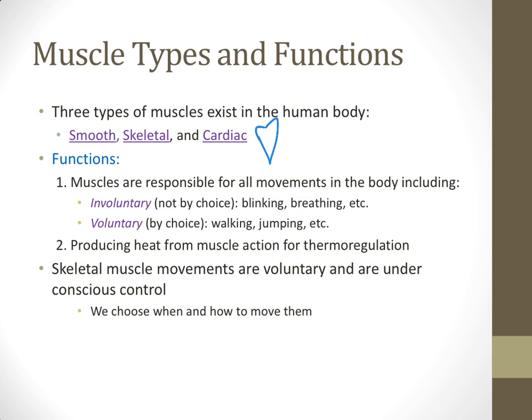The functions of skeletal muscle are first and mostly to help perform any kind of movement that the body will need. There are two ways that muscles perform actions. The first is involuntary, which means that you don't decide to do it. These are things like blinking, breathing, digesting your food, things of that nature. And then there are the voluntary actions, which are the ones we're going to talk mostly about.